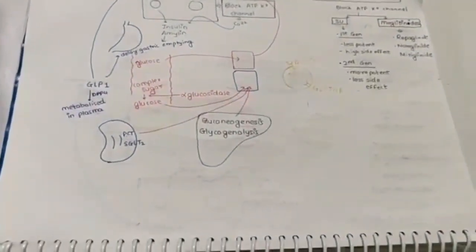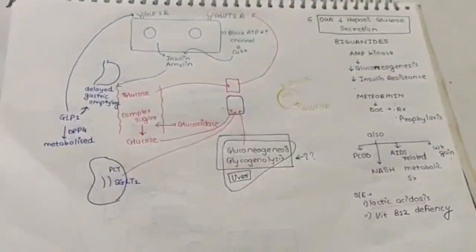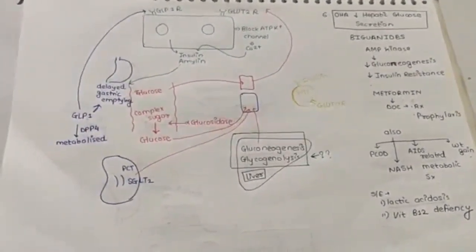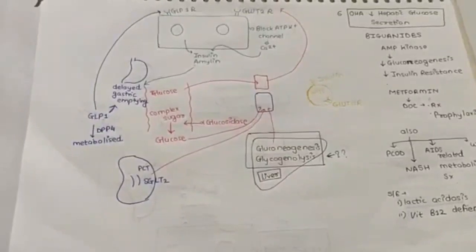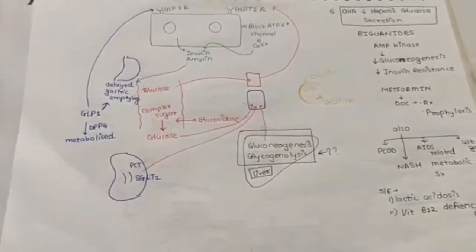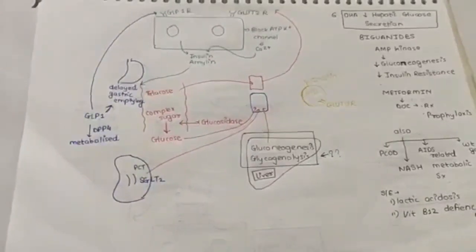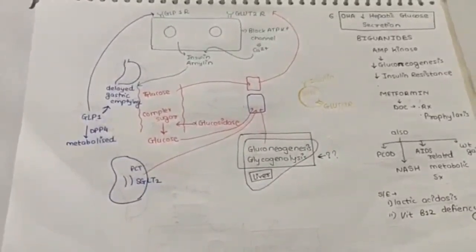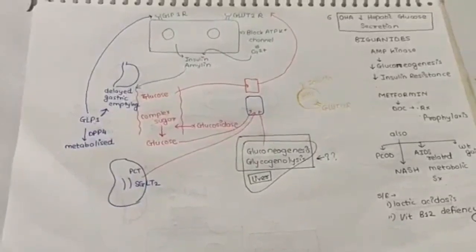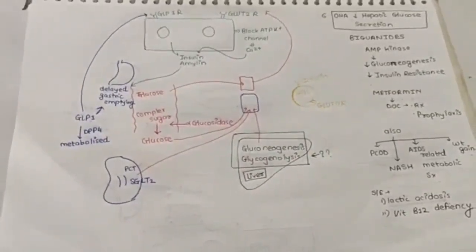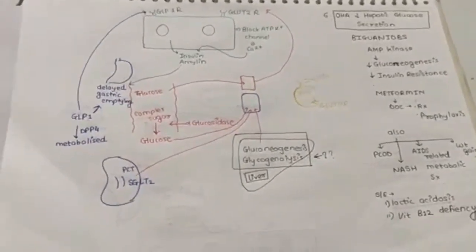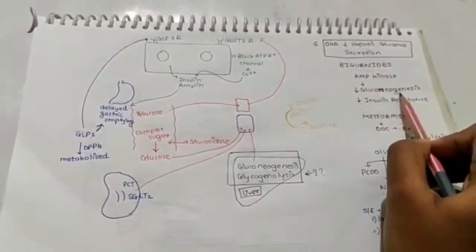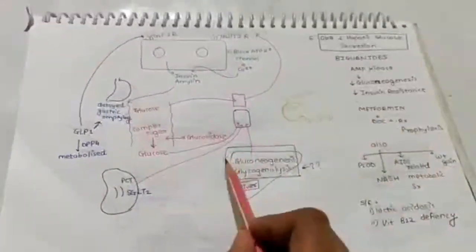Moving to the next category of drug. There is oral hypoglycemic agent which will reduce the hepatic glucose secretion. These are biguanides, which consist of metformin. Other drugs in this class have been banned. Metformin is a drug of choice for both treatment as well as prophylaxis of diabetes. It is also useful in other things such as PCOS, non-alcoholic fatty liver disease, AIDS-related metabolic syndrome and also in antipsychotic-related weight gain. How does it act? It releases AMPK which reduces gluconeogenesis and therefore will be helpful in reducing blood glucose level by its action on liver. Plus, it also decreases the insulin resistance.